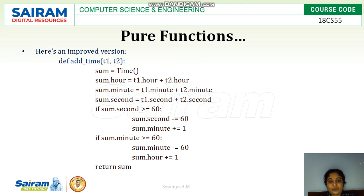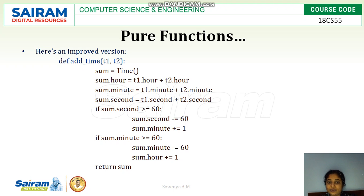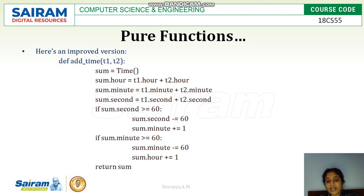Here is an improved version. Sum is calculated with the help of t1 and t2, but it handles the 60-second and 60-minute boundary. If seconds is more than 60, then sum.seconds is reduced and minute is incremented by 1. If minutes is more than 60, then minutes is reduced by 60 and the remaining value is kept, while hour is updated accordingly.